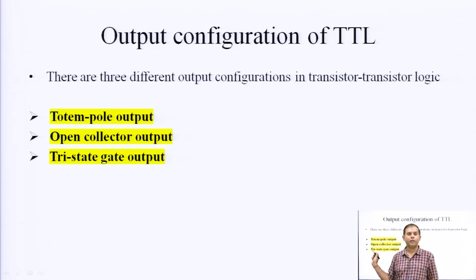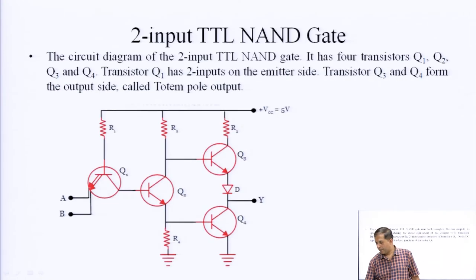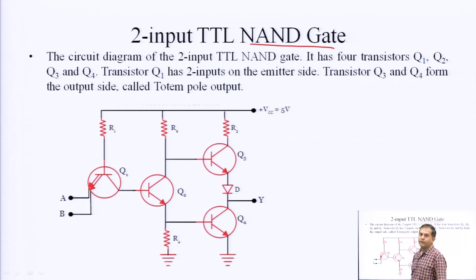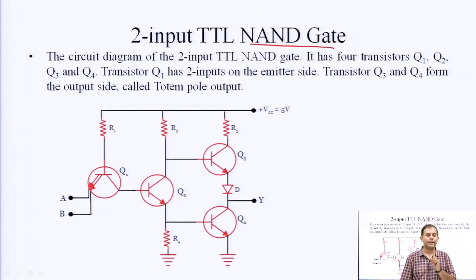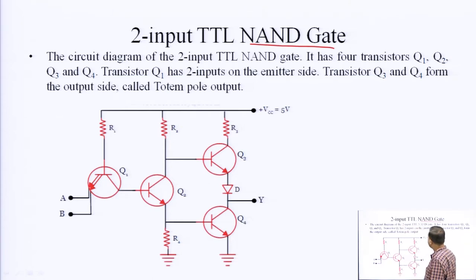There are three output configurations: totem pole output, open collector output, and tri-state output. Before that, we will discuss a normal TTL logic and implement a NAND gate. The output of a NAND gate: when both inputs are low the output is high; if any one input is high the output is low. Now we will implement this NAND gate logic using transistor-transistor logic. The diagram shows a two-input TTL NAND gate.